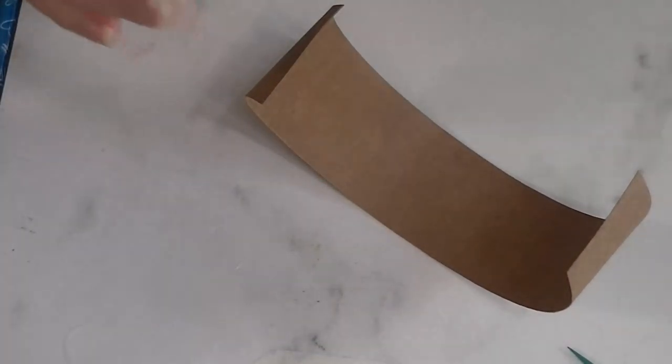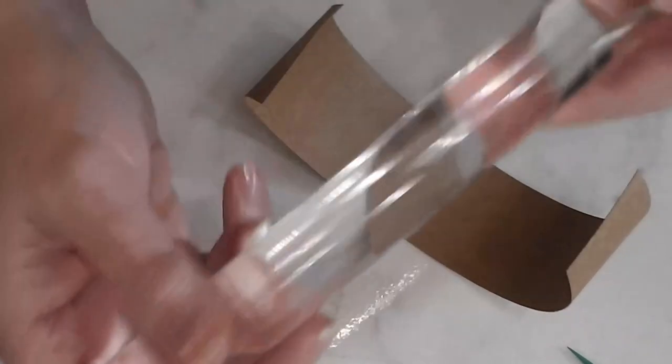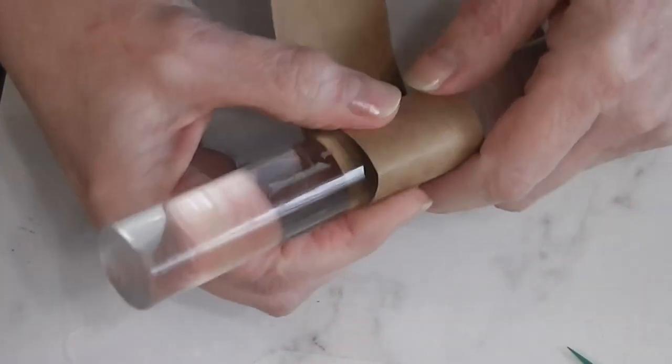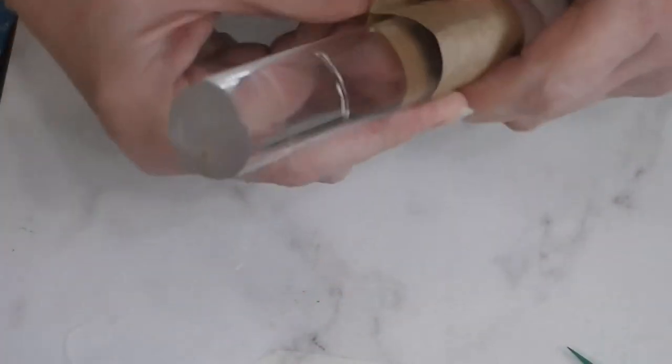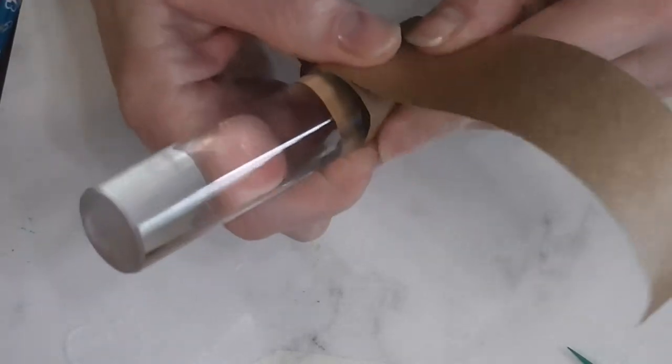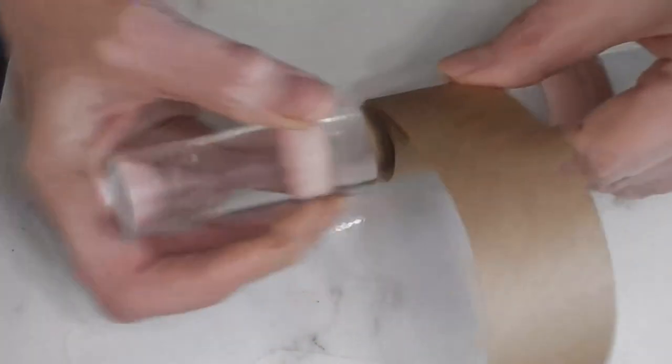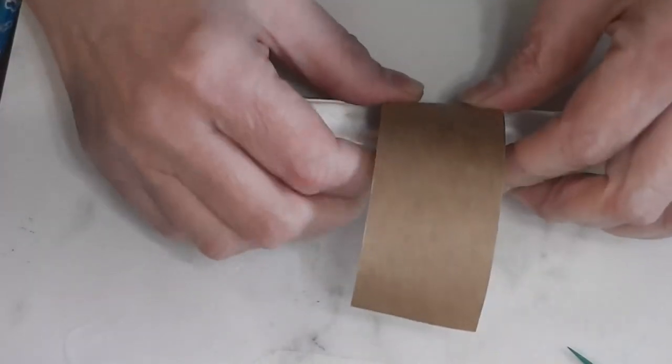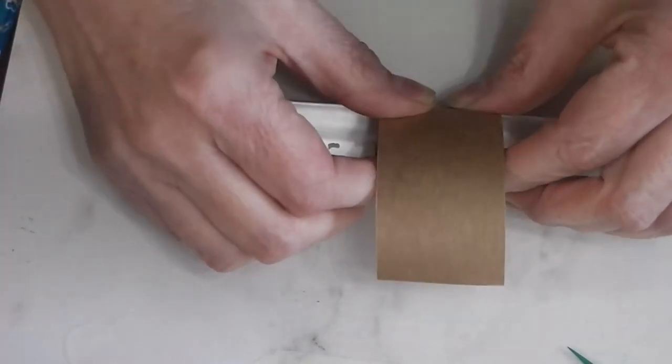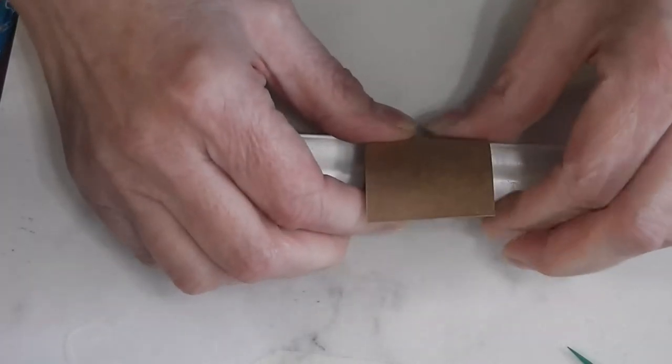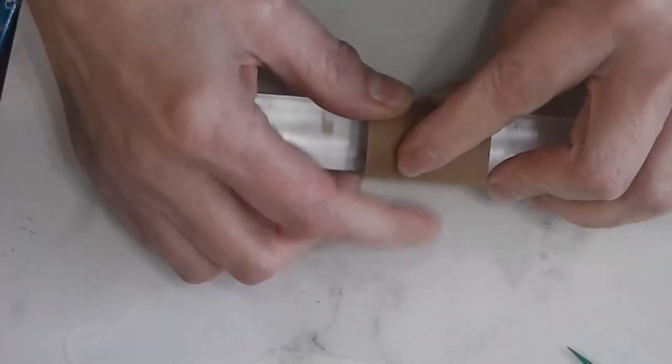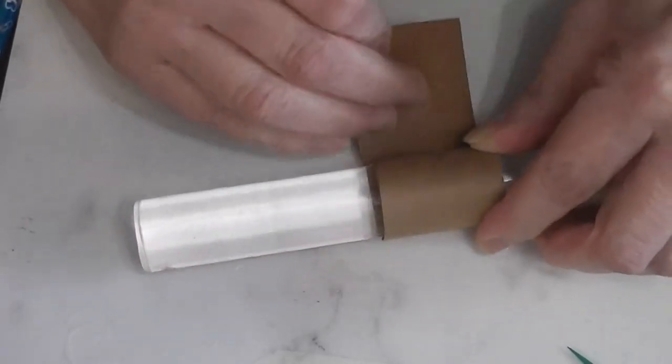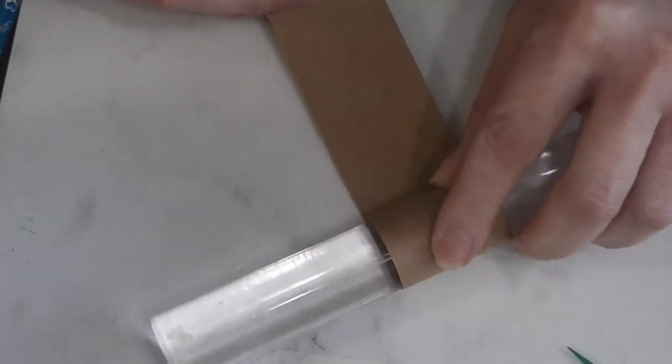We need something about an inch in diameter to wrap this around. I find that my acrylic roller for my clay is just the perfect size. You can adjust the sizing to make any size pot you want. I'll give you complete dimensions of the finished pot when I'm done.